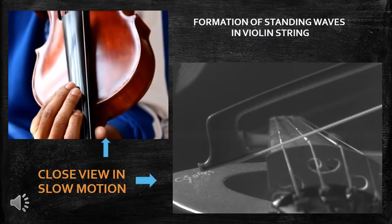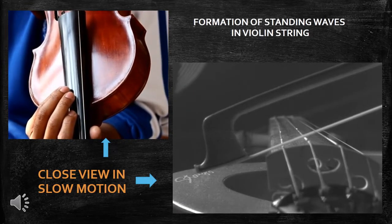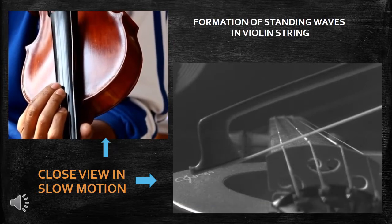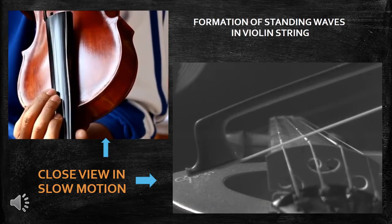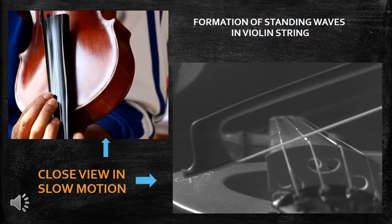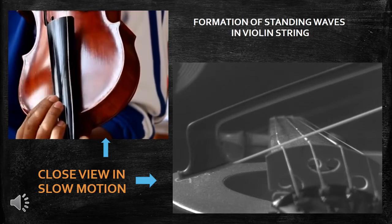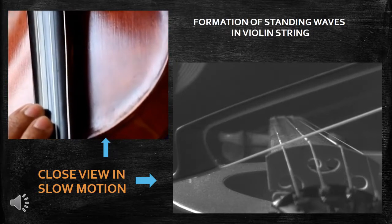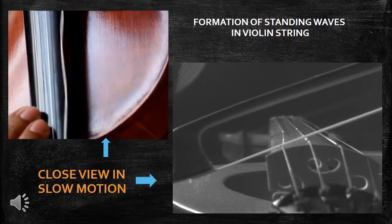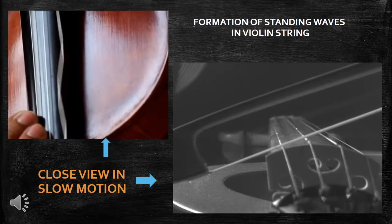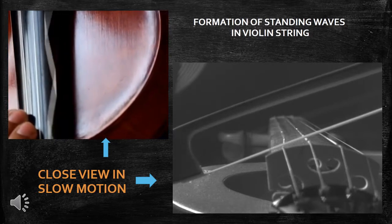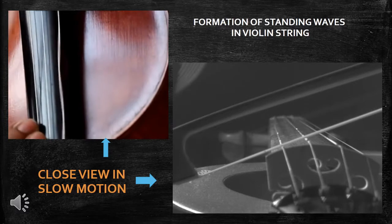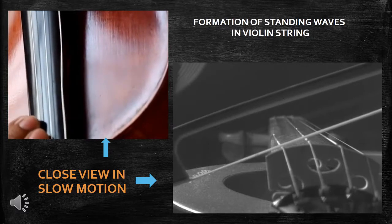Now we are going to see the second example of wave motion — the formation of waves on a stretched string. When the strings are vibrated with the help of a bow, standing waves are created. The standing waves formed on the strings cannot easily be seen with the naked eye, but here you are able to observe the microscopic vibrations of the stretched string in the case of a violin.